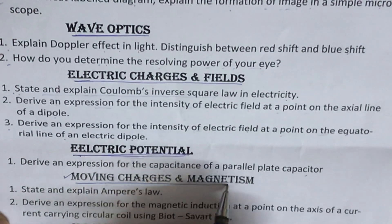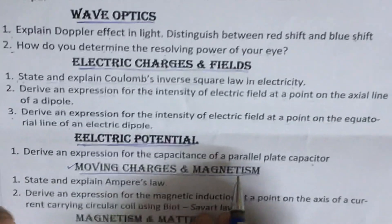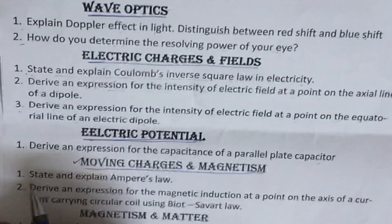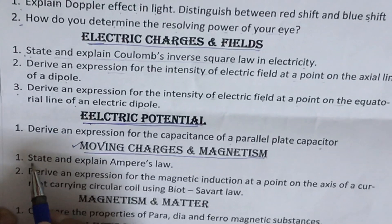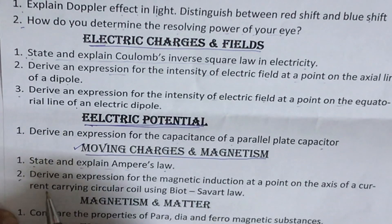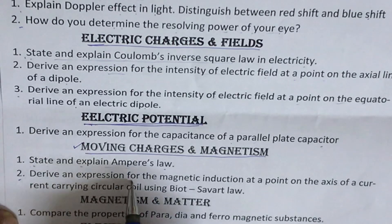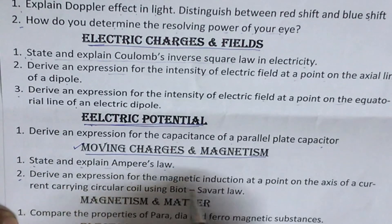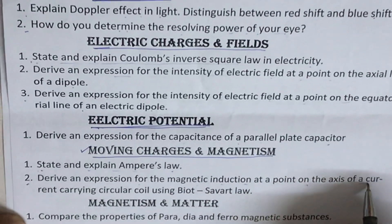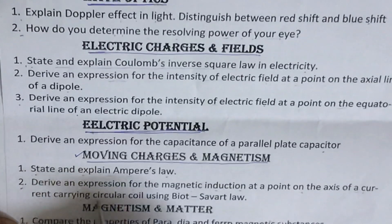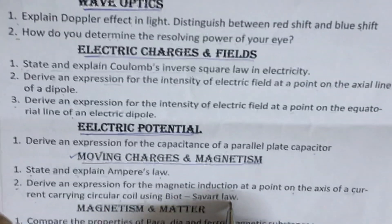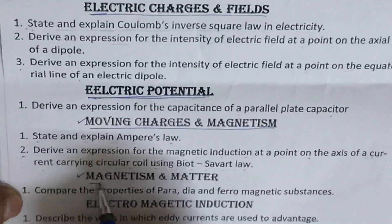The next topic is Moving Charges and Magnetism. There are two questions from this chapter. The first question is: state and explain Ampere's law. The second question is: derive an expression for the magnetic induction at a point on the axis of a current carrying circular coil using Biot-Savart law.